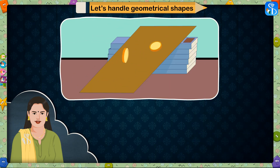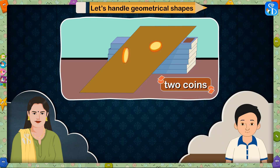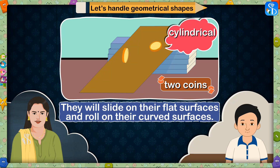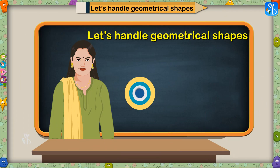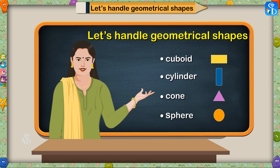What do you see in this third picture? How will you describe its shape? There are two coins in this picture. They are cylindrical in shape. That's right! They will slide on their flat surfaces and roll on their curved surfaces. So today we have learnt about cuboid, cylinder, cone and sphere — these geometrical shapes.